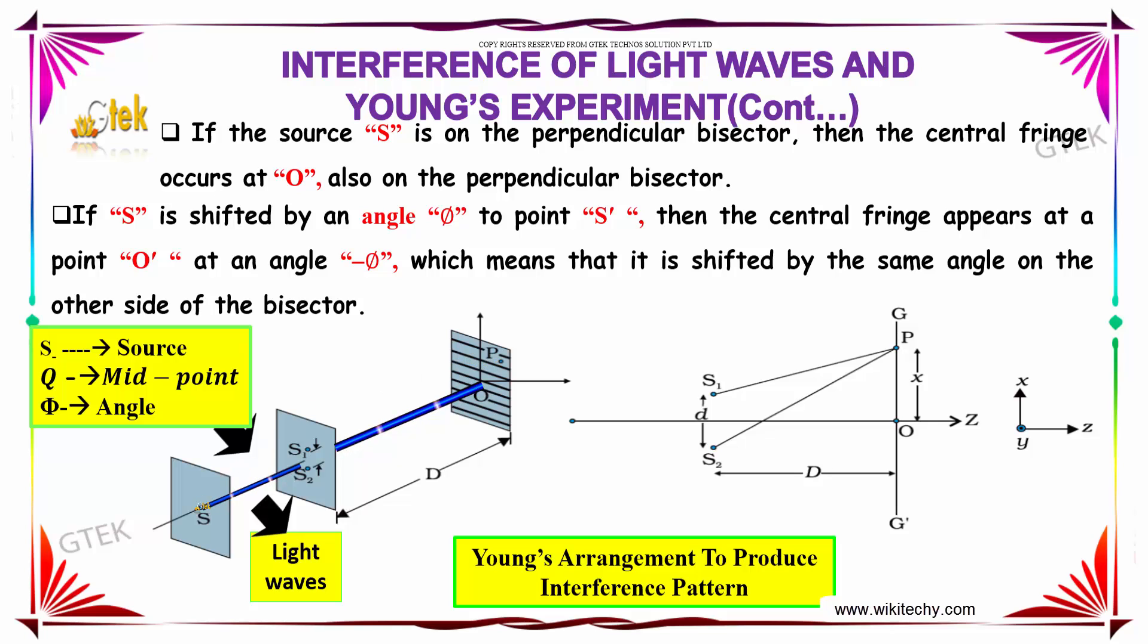If S is shifted by an angle φ to point S', then the central fringe appears at a point O' at an angle of -φ, which means that it is shifted by the same angle on the other side of the bisector.